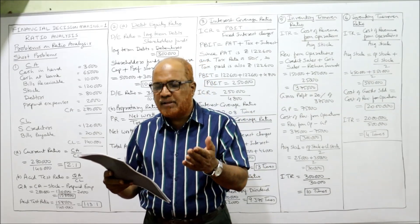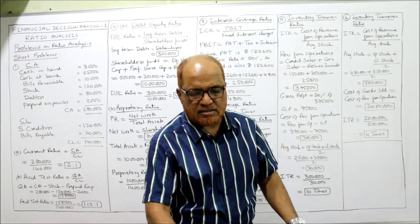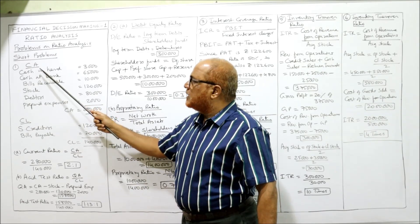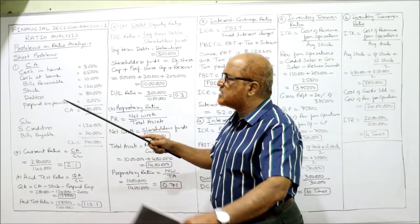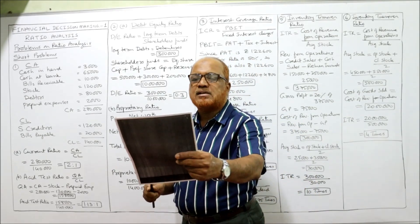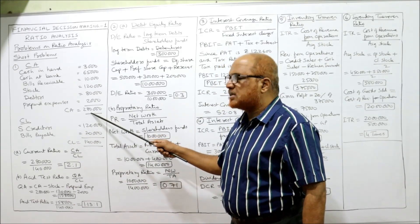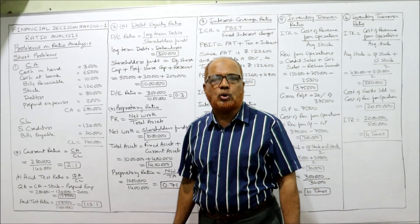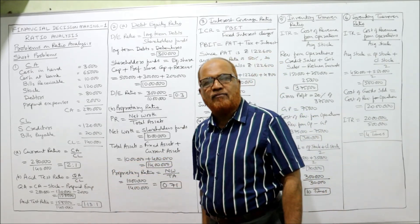Now see the solution. Current assets total is 2,80,000. Current liabilities — sundry creditors and bills payable — total 1,40,000. The formula for current ratio is current assets divided by current liabilities: 2,80,000 divided by 1,40,000 equals 2. We write this as 2:1, indicating that for every one rupee of current liability, we have two rupees of current assets.